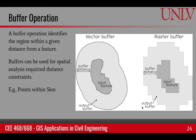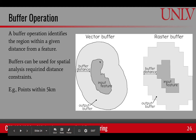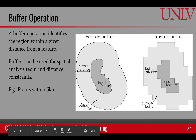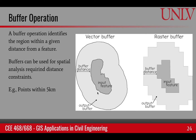Based on the distance function we just talked about, we can create buffers. Buffers are regions around a feature at a constant distance. For example, if we have a vector feature, we can create a buffer at a fixed distance, which gives us a larger polygon covering the region outside the input polygon. Likewise, if we have raster cells, we can create a buffer around those cells based upon some fixed distance.